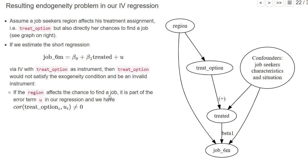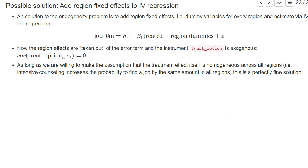Treat_option does not satisfy the exogeneity condition that an instrument has to satisfy. We could solve this problem however if we add region fixed effects. You could think of dummy variables for each region as additional control variables to our IV regression. If we observe data for the confounders, we can solve the problem by adding them as control variables. We still have exogenous variation because treat_option is still chosen randomly within each region.